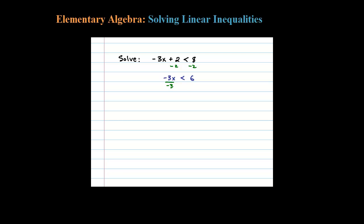The next step would be to divide both sides by negative 3. Here's where you have to be careful. Whenever you divide or multiply by a negative number, you have to reverse the inequality. So it used to read less than, now I'm going to write greater than negative 2. So any number greater than negative 2 should solve the original inequality.